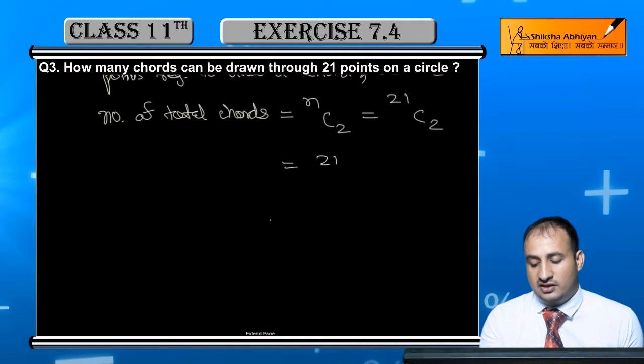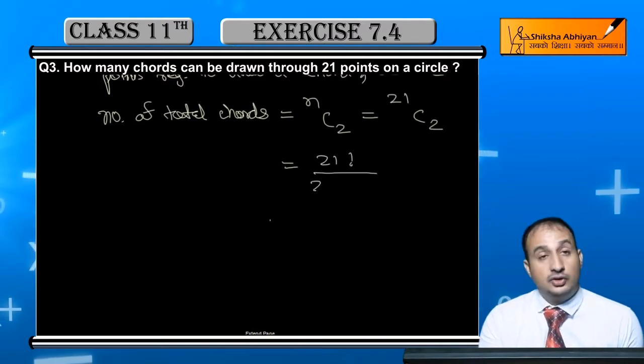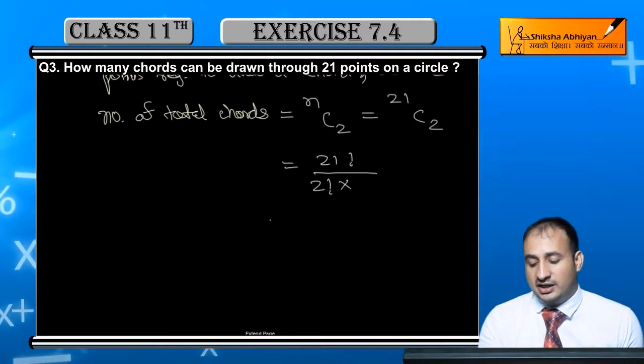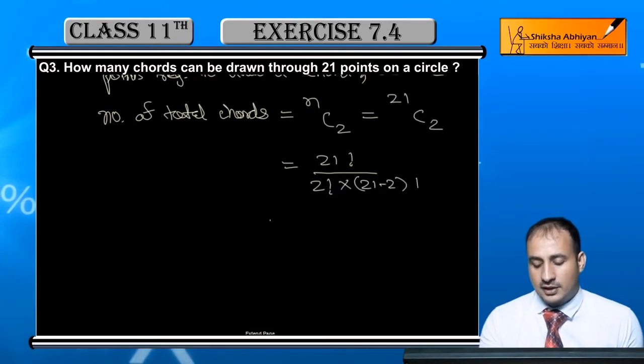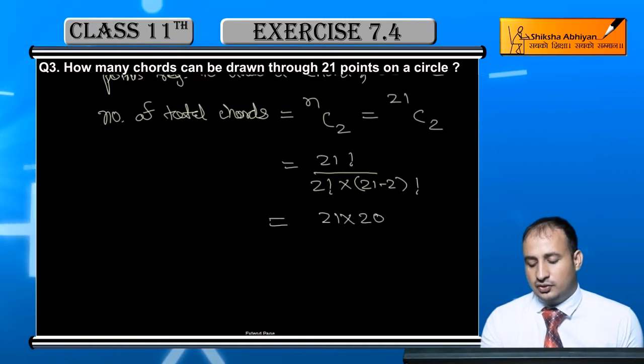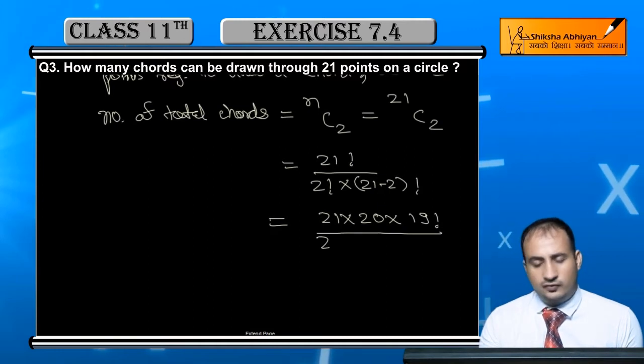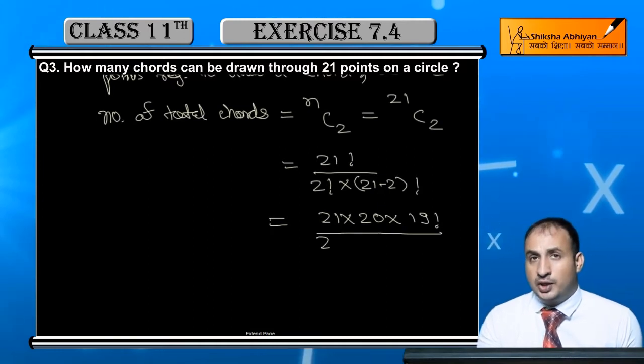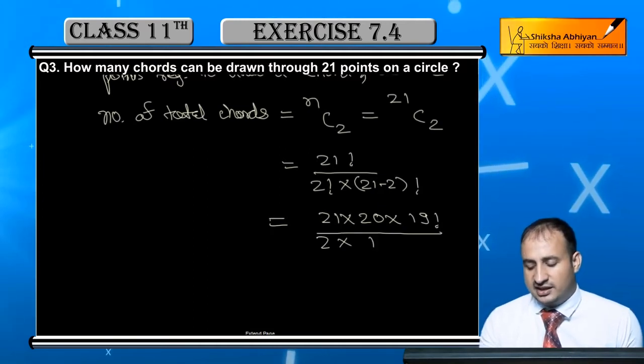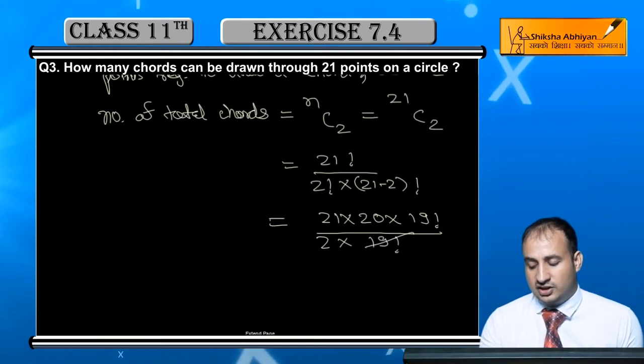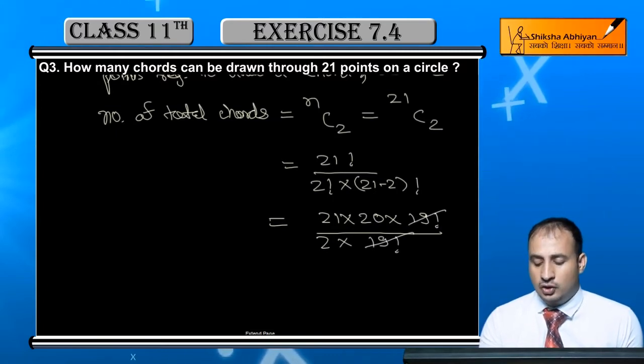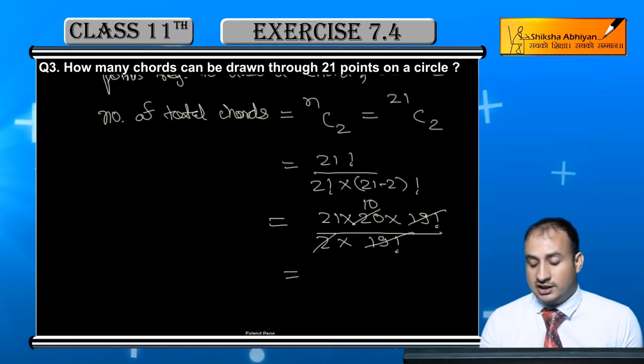That is equal to 21 factorial upon 2 factorial multiplied by (21 minus 2) factorial, which equals 21 × 20 × 19 factorial. I'll stop at 19 factorial because below we have 2 factorial, and 21 minus 2 is 19 factorial. So 19 factorial cancels with 19 factorial, 2 cancels with 20 to give 10, and 10 × 21 equals 210.